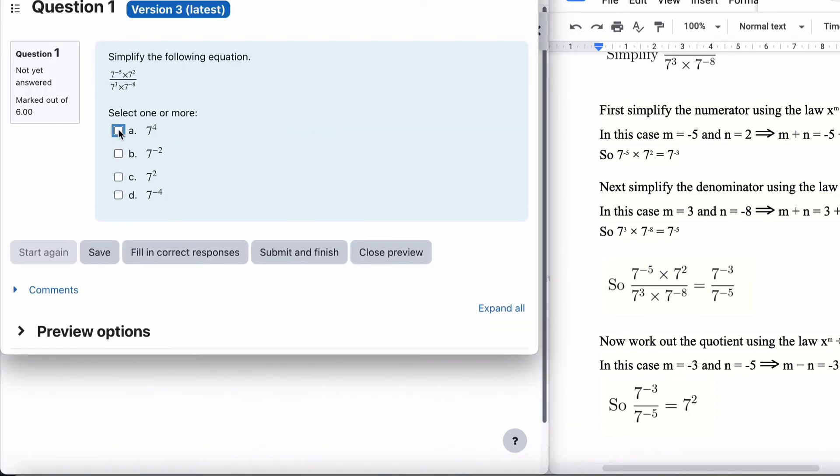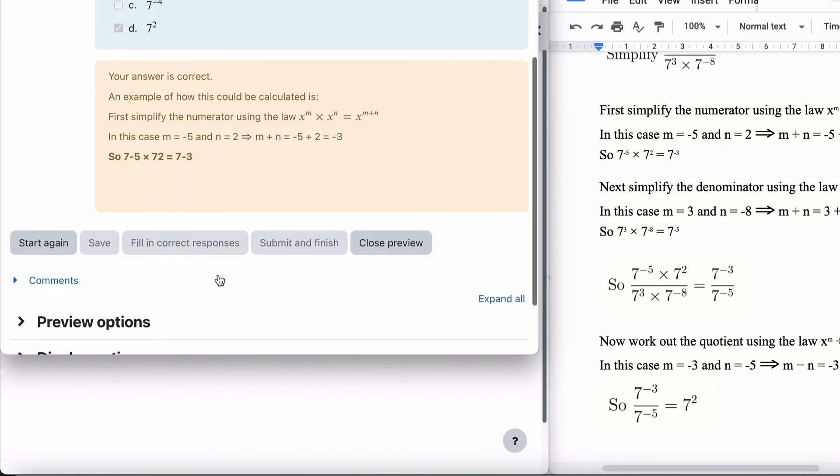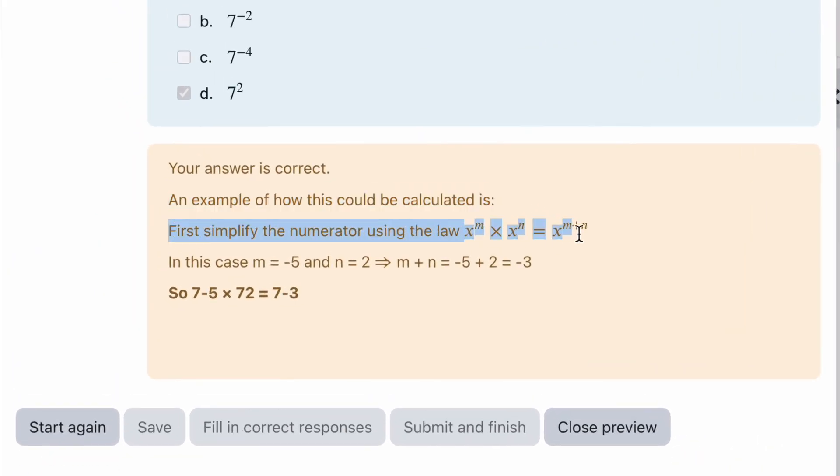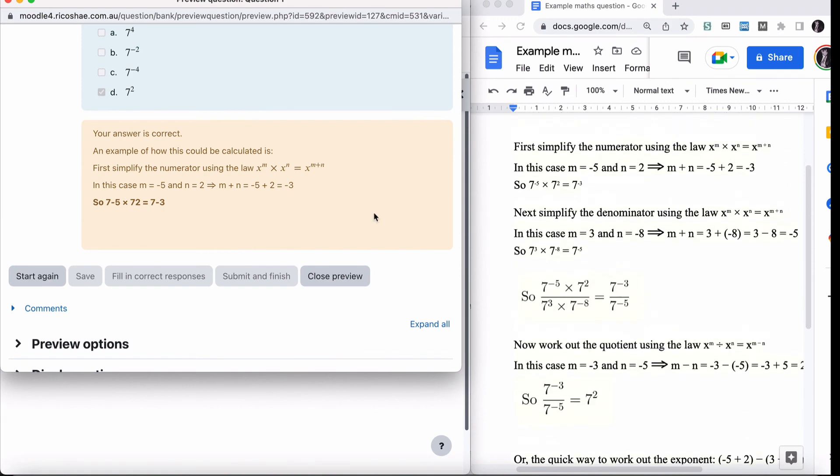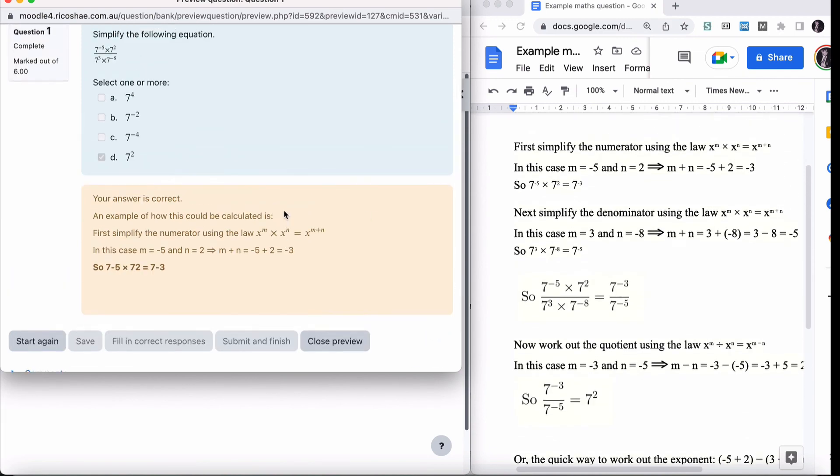If I just run down and save changes and preview. You can see that. If I choose. Choose this answer. There we go. So there's our general feedback. And you can see now your answer is correct. An example of how this could be calculated is. And we've started off the explanation of that calculation. In this case. And you can see that extra symbol in there has now gone in. And these have all been updated as well. So we could go through the rest of that. But I think I've given you a good example of how that all works. And you can continue on and add the rest in.